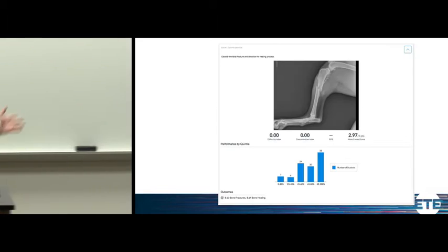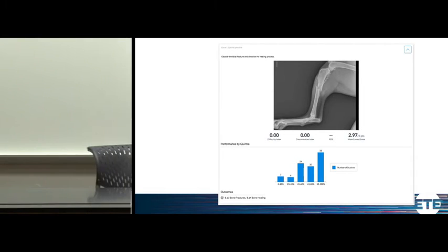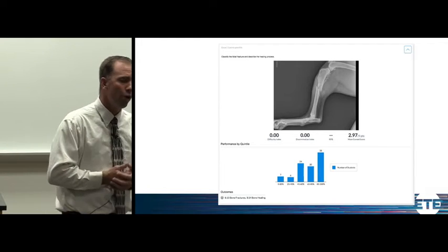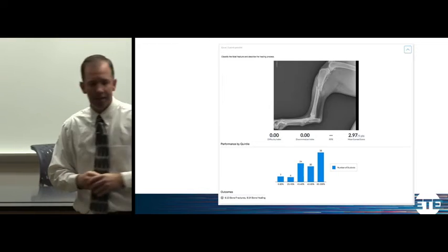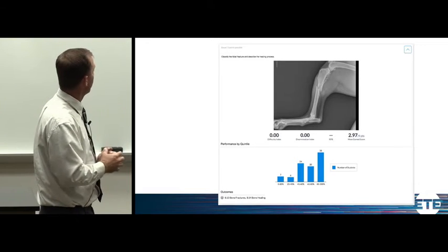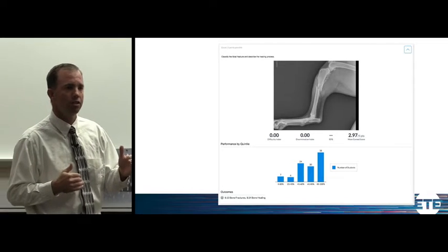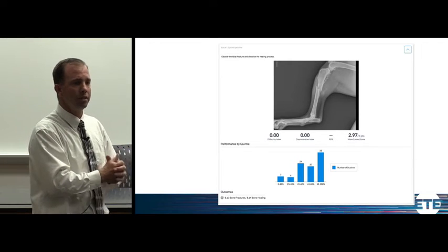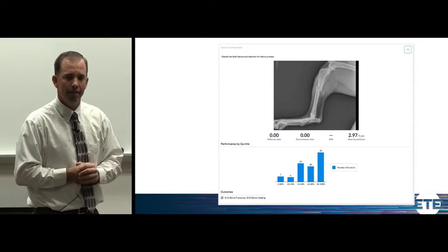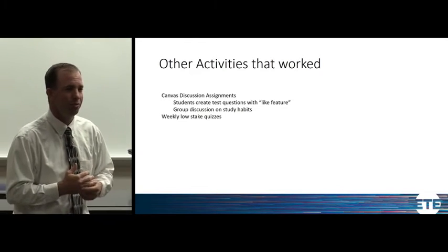Another question type I really liked: you can put pictures in there. The question was 'classify the tibial fracture and describe the healing process' — an essay question. Essay questions take more time to grade but are far more effective at truly assessing learning. For that five-point question, 38 students got all five points, 20 got four, 24 got three, six got two, and seven got one point. That tells us the level of mastery, and you can designate within the analytics what you consider mastery — three points, four, or five. I gave the same question on the cumulative final, and it was amazing how many students still didn't answer it correctly.